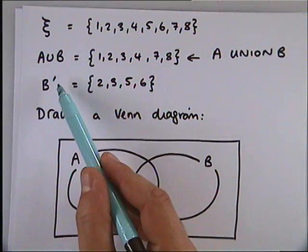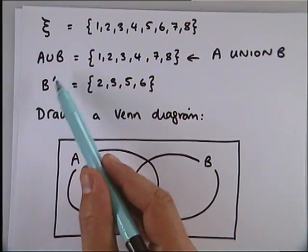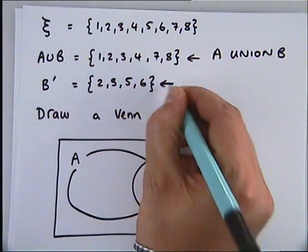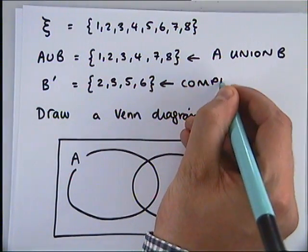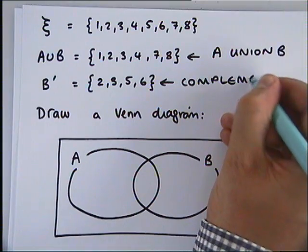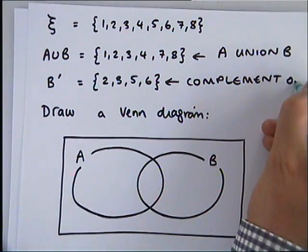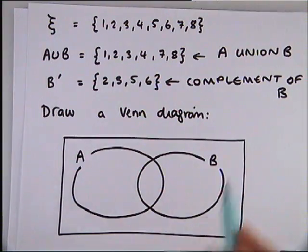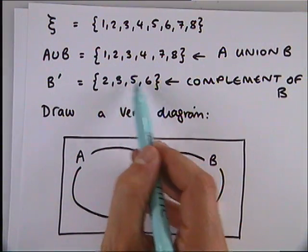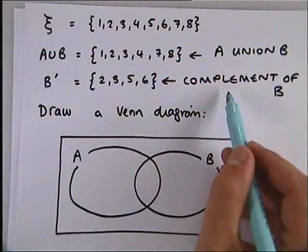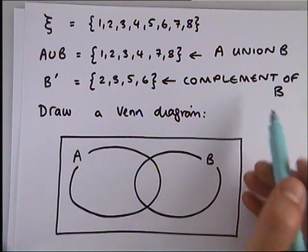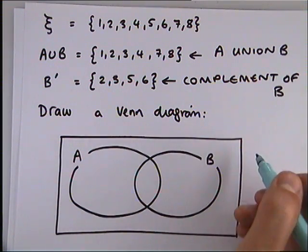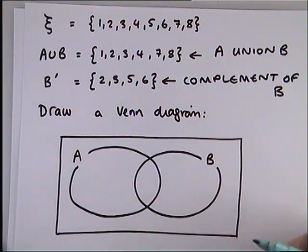This one here — this little dash, B dash — means the complement of B. That's a really simple one. Any numbers in this set are not allowed to be in B. The complement of B means they must be outside circle B.